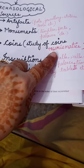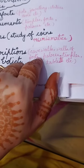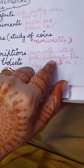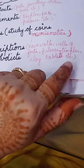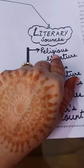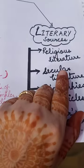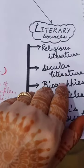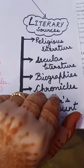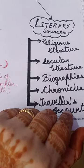The study of coins is known as numismatics. Then inscriptions and edicts, like cave walls, walls of forts, palaces, temples, clay tablets, etc. In literary sources we can see religious literature — which we will learn today — secular literature, biographies, chronicles, and travelers' accounts.